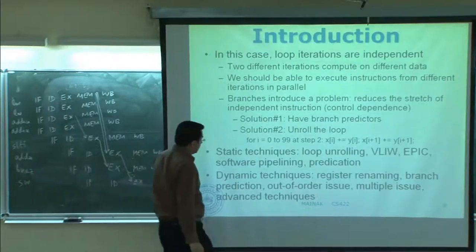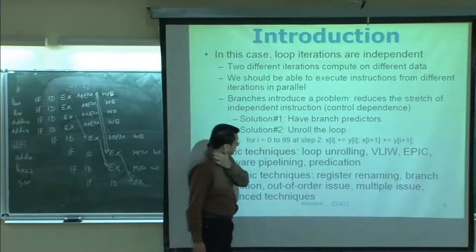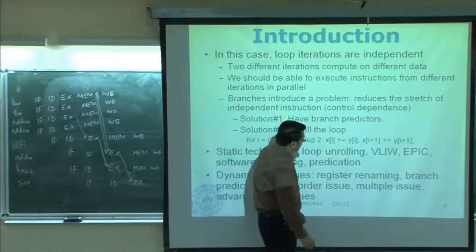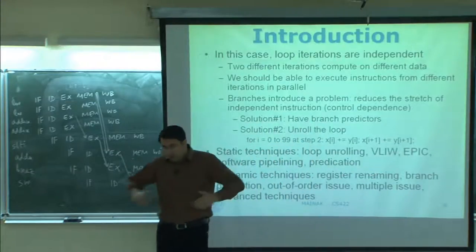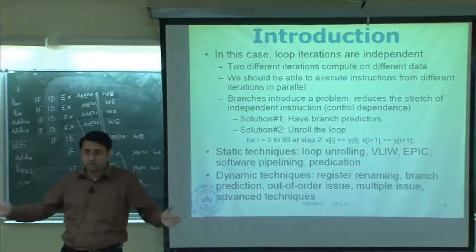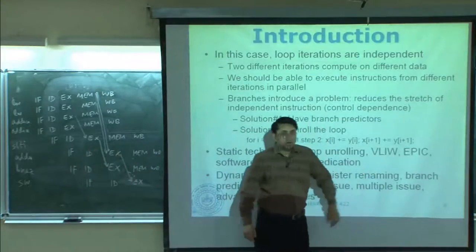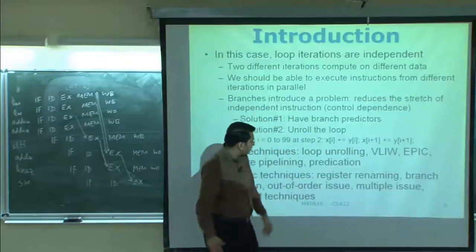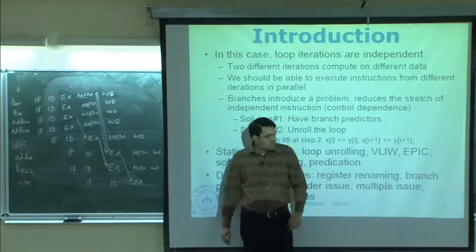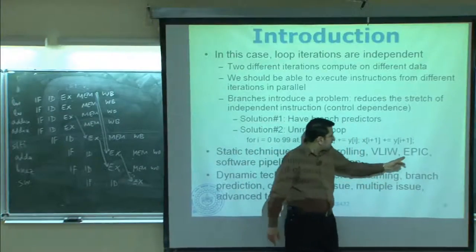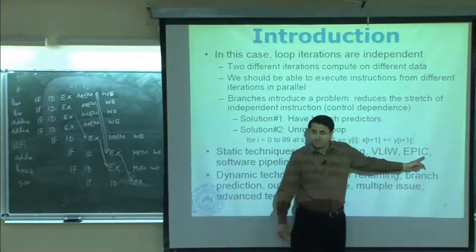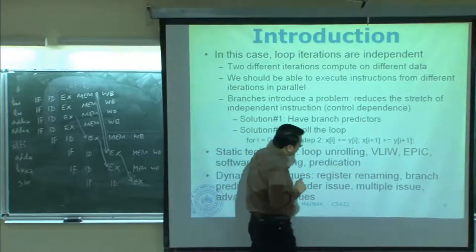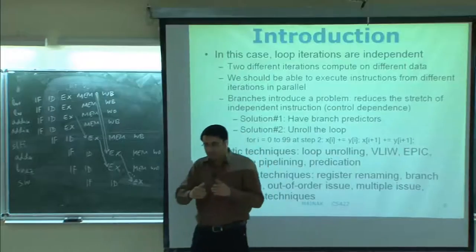In a VLIW machine, one instruction would be a combination of four instructions that go in parallel — that is how the compiler prepares instruction packets, which is where the name comes from. EPIC is very similar; it stands for Explicitly Parallel Instruction Computers. The compiler prepares explicit parallel instruction packets. The only difference between VLIW and EPIC is that in VLIW the packet length is usually constant — at design time you decide that one packet will have four instructions. If the compiler cannot find four parallel instructions in a particular slot, it will put no-ops in the empty slots. EPIC allows you to terminate instruction packets early, so EPIC has a variable-size instruction packet.